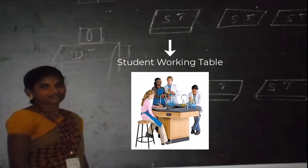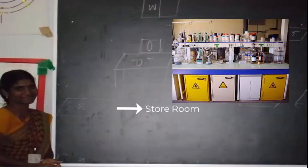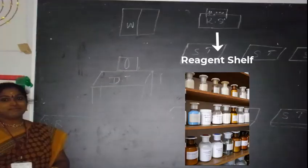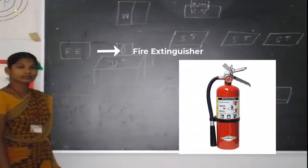Another student teacher came and wrote SR which means storeroom where chemicals are kept. Another student teacher came and wrote FE, which means fire extinguisher. For precaution it will be there in the science lab.